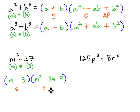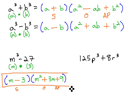Finally, to fill in the signs, I think about SOAP. S stands for same sign as the problem, or minus. O is the opposite sign of the problem, which is plus, and AP stands for always positive. I have factored m cubed minus 27 to m minus 3 times m squared plus 3m plus 9.